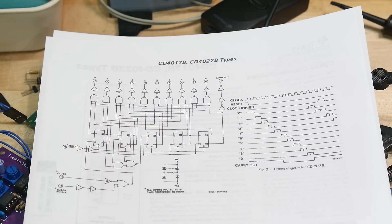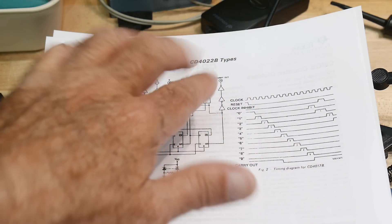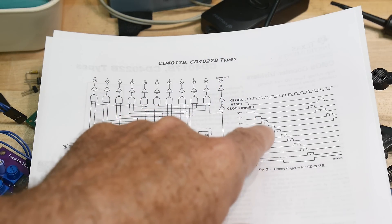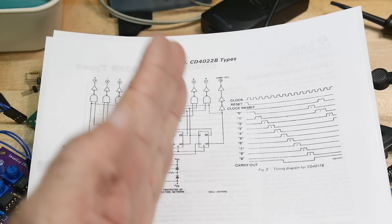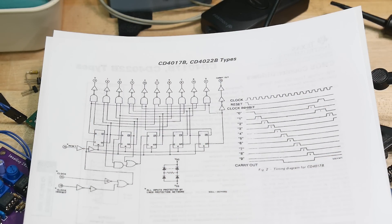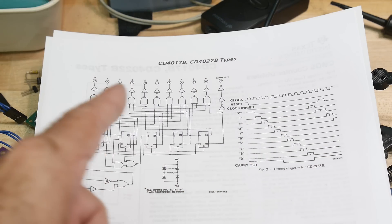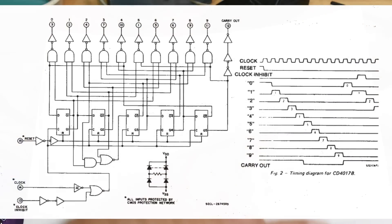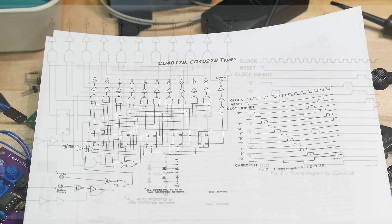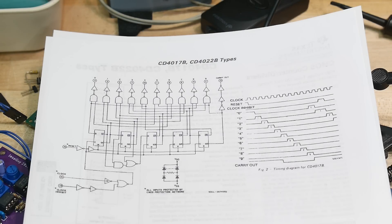The way it counts is one, two, three, four - each line goes high in succession. So it's not counting in binary, the zero one lights up, the one lights up, the two lights up, and it just keeps going across like that.